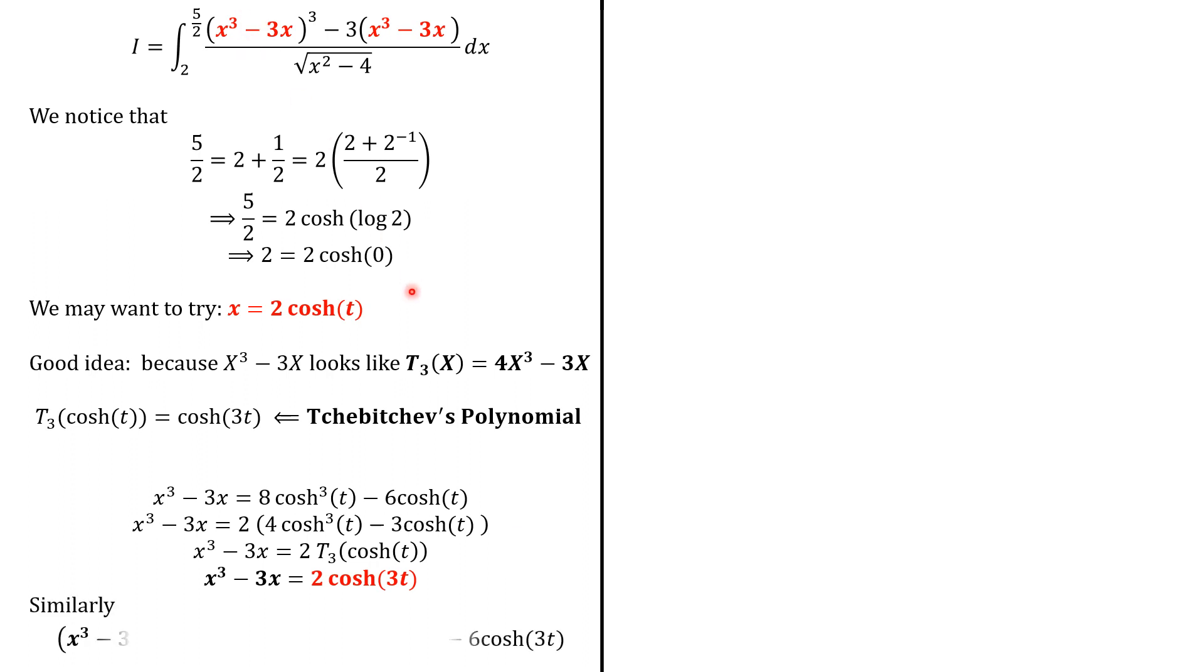So now the whole numerator will give us this. Actually, it is the same computation as here, but the angle is replaced by 3 times the angle. So at the end, we should find that the numerator equals 2 cosh(9t) because 3t is multiplied by 3. So we have 9t here. So we may now focus on the denominator.